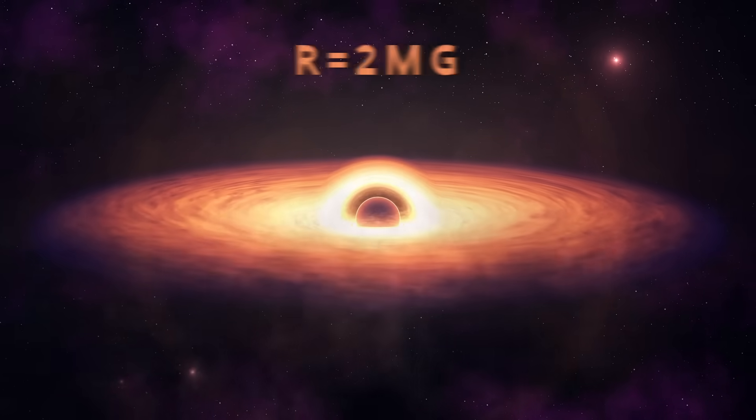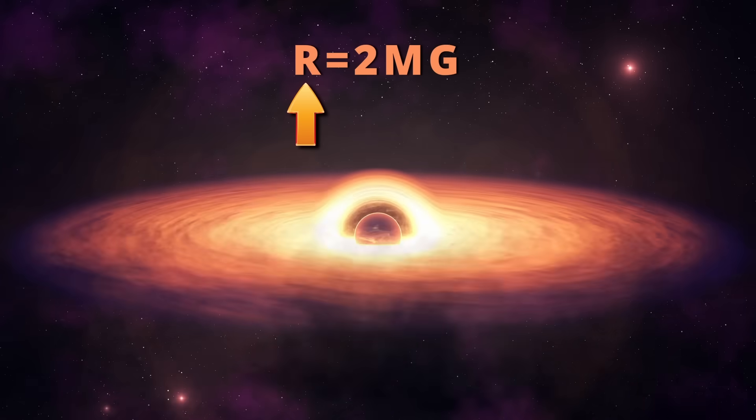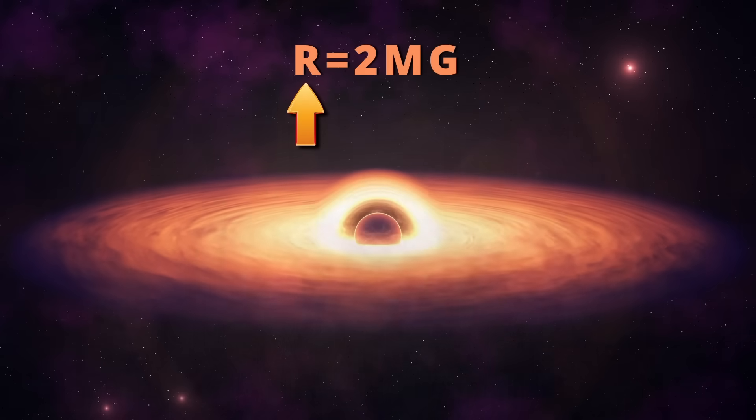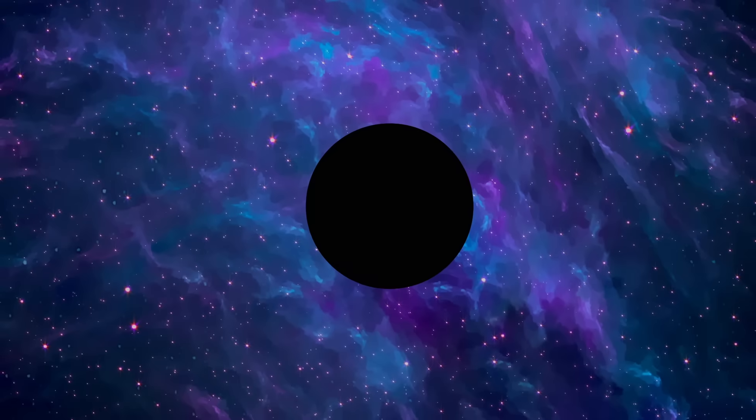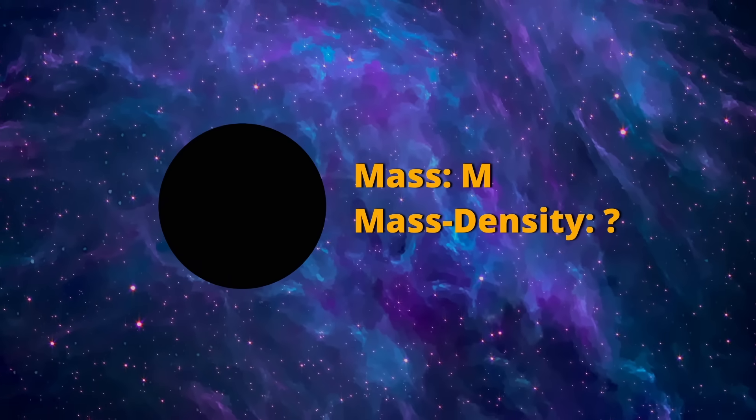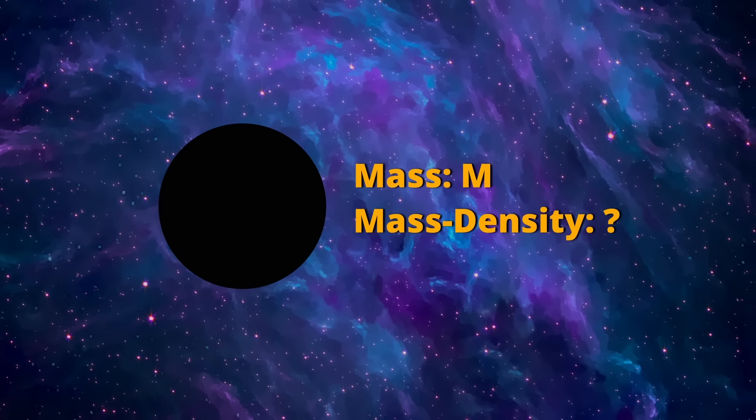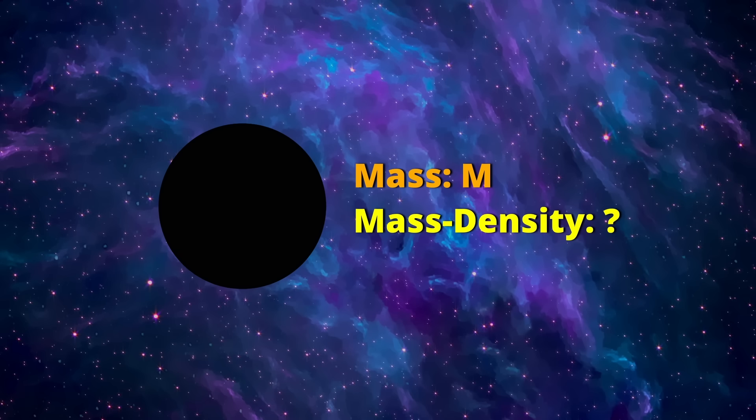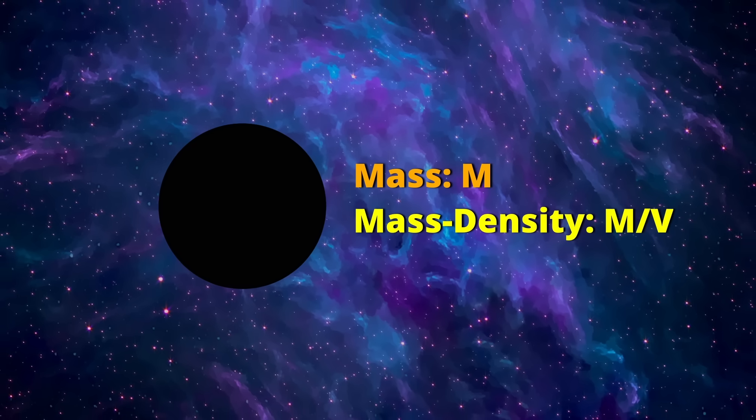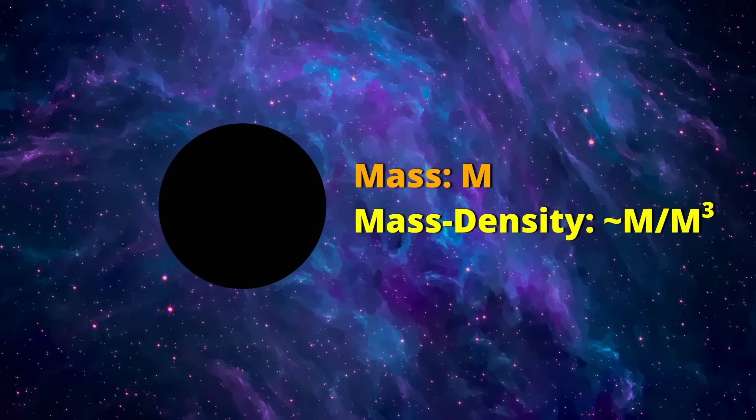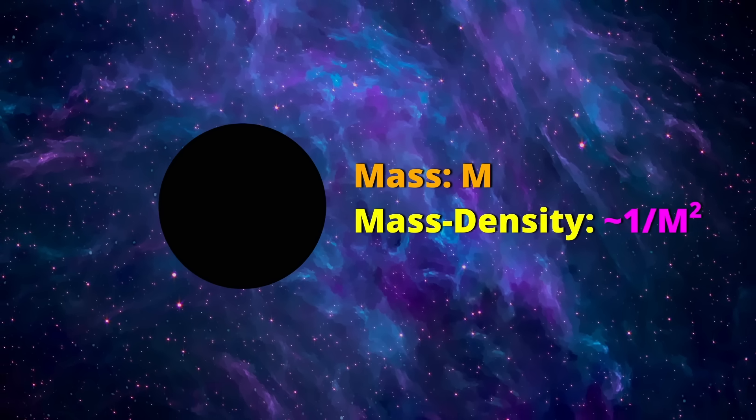You see, a black hole forms when its radius, that's the capital R, is below the Schwarzschild radius, that's 2MG, where M is the mass of the black hole and G is Newton's constant. Now let's say we want to know what's the mass density of matter at which a black hole of mass M forms. The mass density is mass divided by the volume, and the volume is the cube of the Schwarzschild radius times some constant. This means that the mass density is proportional to 1 over the square of the mass.